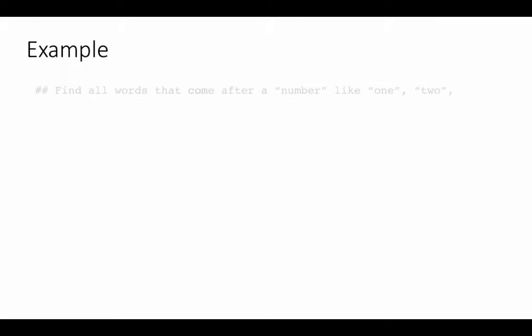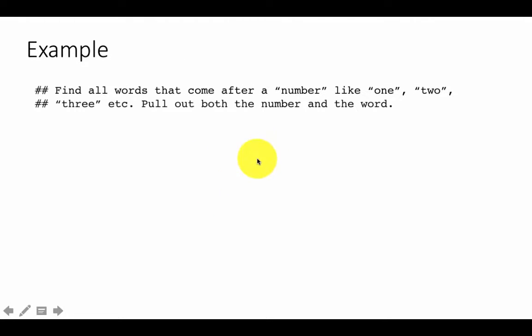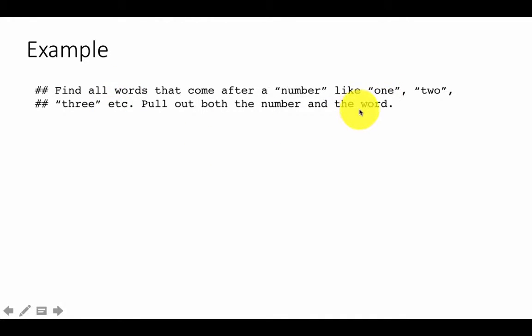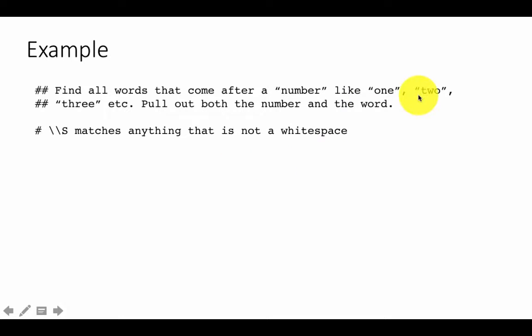Let us see an example. Here we want to find all the words that come after a number like 1, 2, 3, up to 10, and then followed by some particular word — like one cat and two dogs and that kind of stuff.